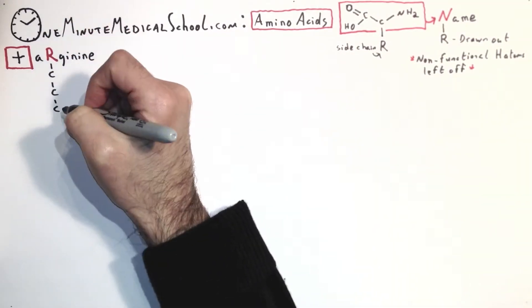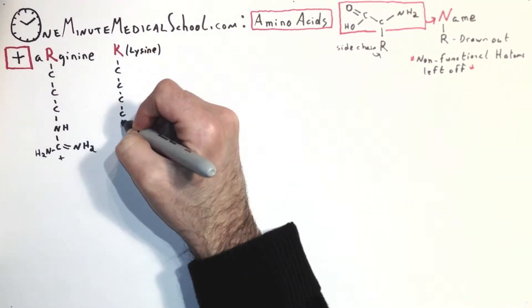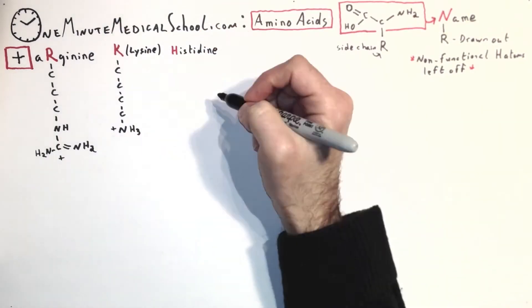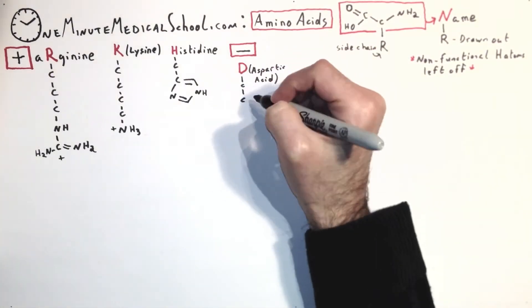Leave the non-functional hydrogen atoms off. So arginine looks like this. Notice it's got a lot of nitrogen amino type groups near the end, as does lysine. Histidine also has, and that makes them the positively charged groups.